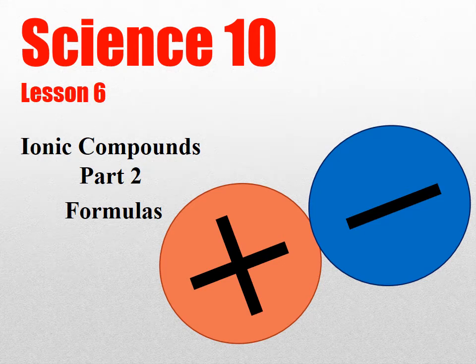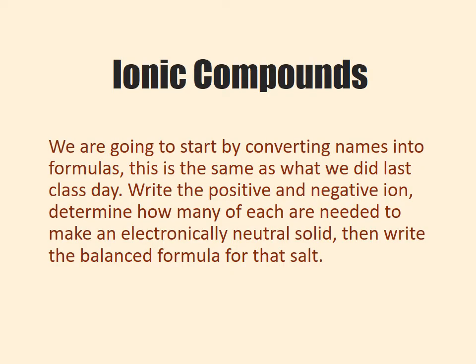Welcome to Science 10 Lesson 6, Ionic Compounds Part 2: Formulas. We are going to start by converting names into formulas. This is the same as what we did last class day. Write the positive and negative ion, determine how many of each are needed to make an electronically neutral solid, then write the balanced formula for that salt.